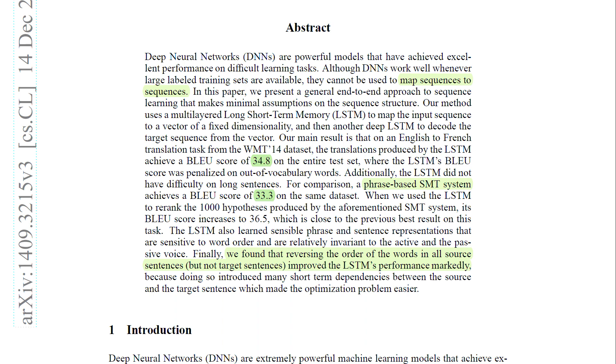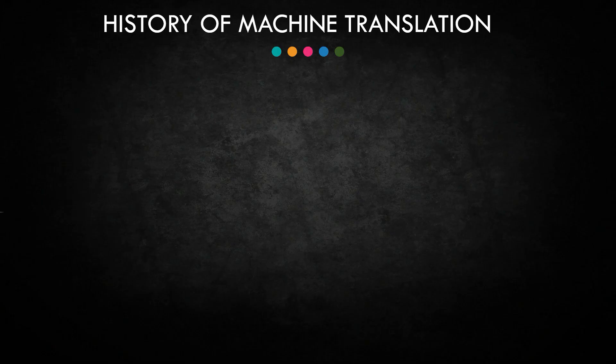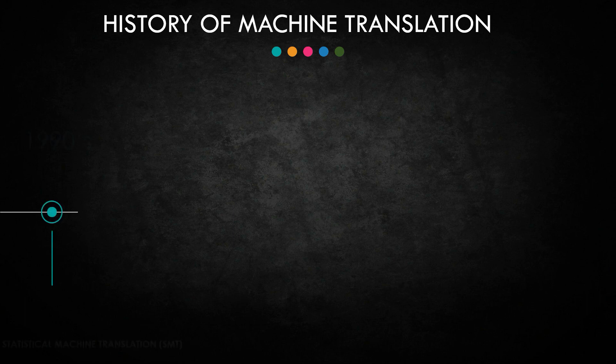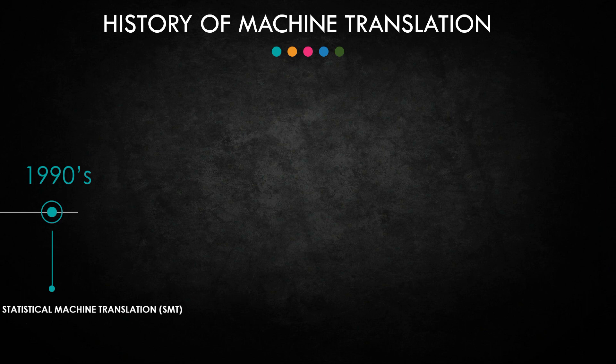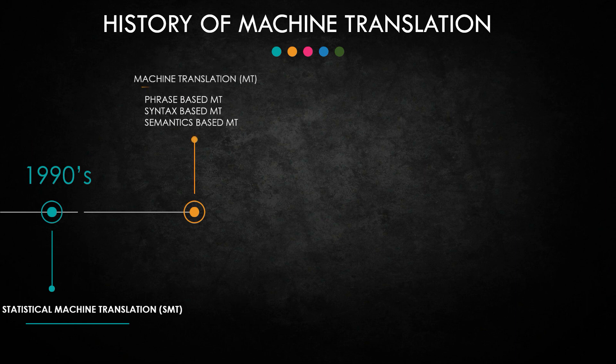We can see here that it's only 1.5 blue point score higher, but we really need to put this in perspective to really understand just how impressive this result is. The first SMT or statistical machine translation systems were introduced during the 1990s and quickly took over the field of machine translation. And some of these SMT systems were phrase-based, syntax-based, or semantics-based.